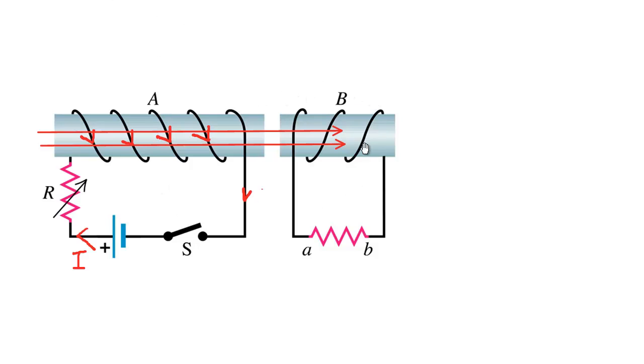Before the switch was closed, there was no field lines or no flux passing through solenoid B. It wants to remain at zero. So all of a sudden I've got these red magnetic field lines extending through it to the right. It wants to get back to a state of zero, so it has to induce an EMF and induce a current to cancel off that red magnetic field line. So it wants to create a current to create magnetic field lines to the left to oppose it.